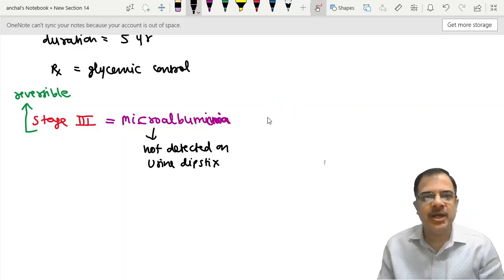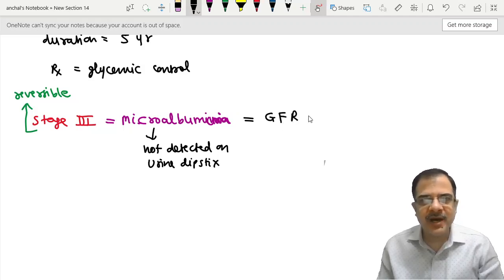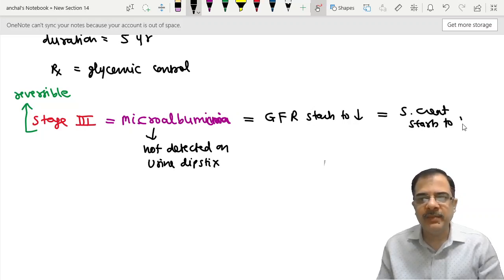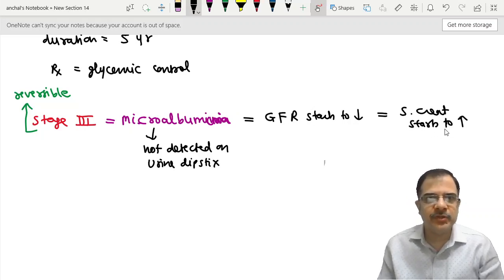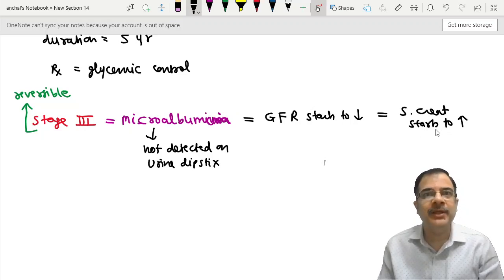Albumin, if going in more quantity than normal, causes free radical injury to the tubule and kidney parenchyma. So free radical injury by albumin leads to GFR starting to decrease. Serum creatinine starts to increase. Though they can be within the normal limit, physiological limit, but they start showing decrease and increase respectively.